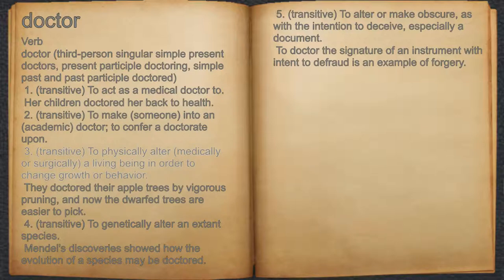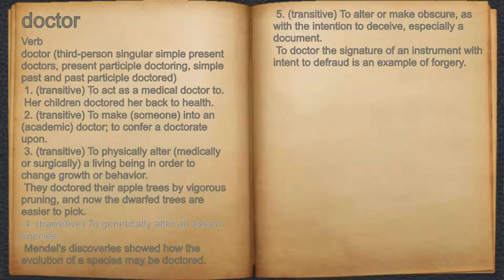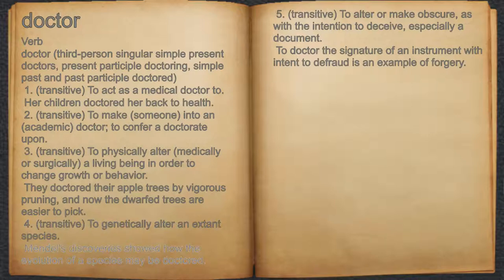3. Transitive: to physically alter, medically or surgically, a living being in order to change growth or behavior. For example, they doctored their apple trees by vigorous pruning, and now the dwarf trees are easier to pick. 4. Transitive: to genetically alter an extant species. For example, Mendel's discoveries showed how the evolution of a species may be doctored.